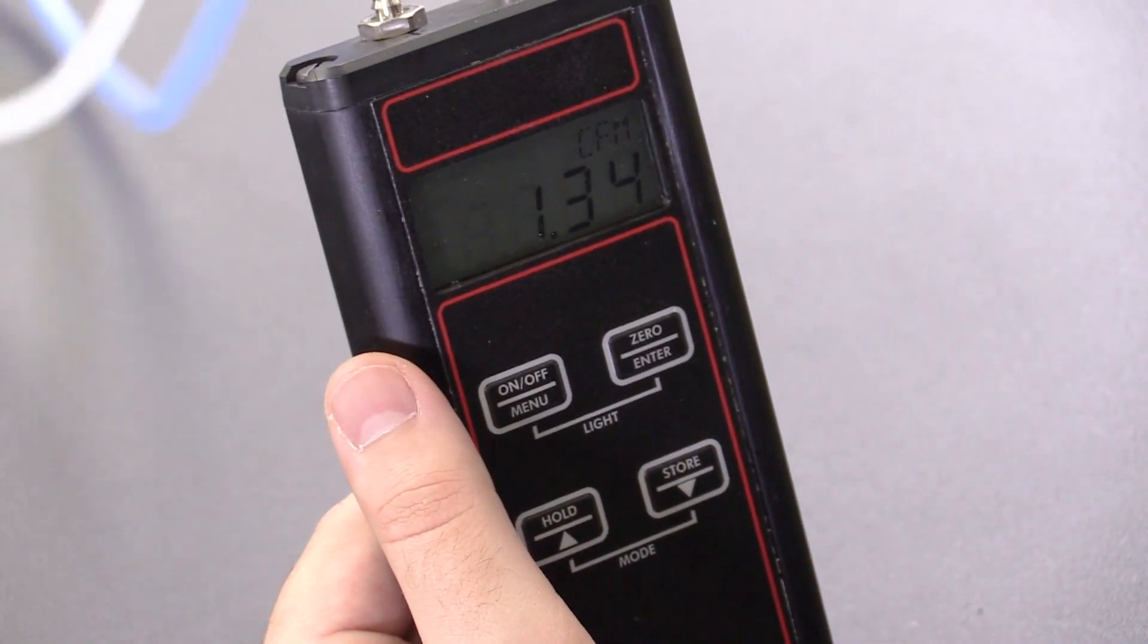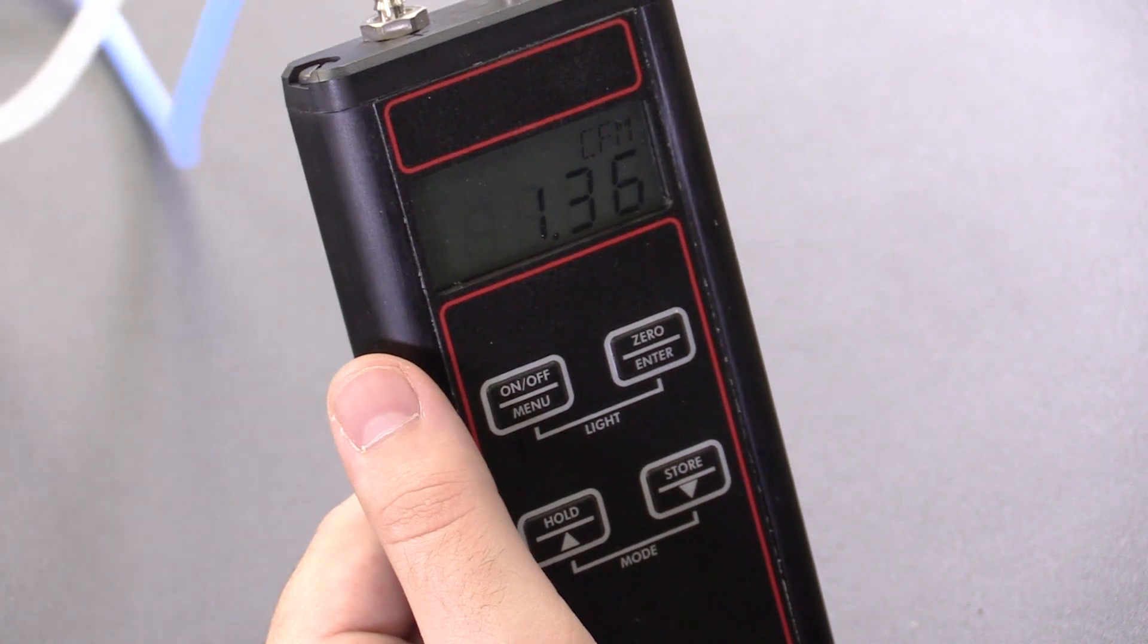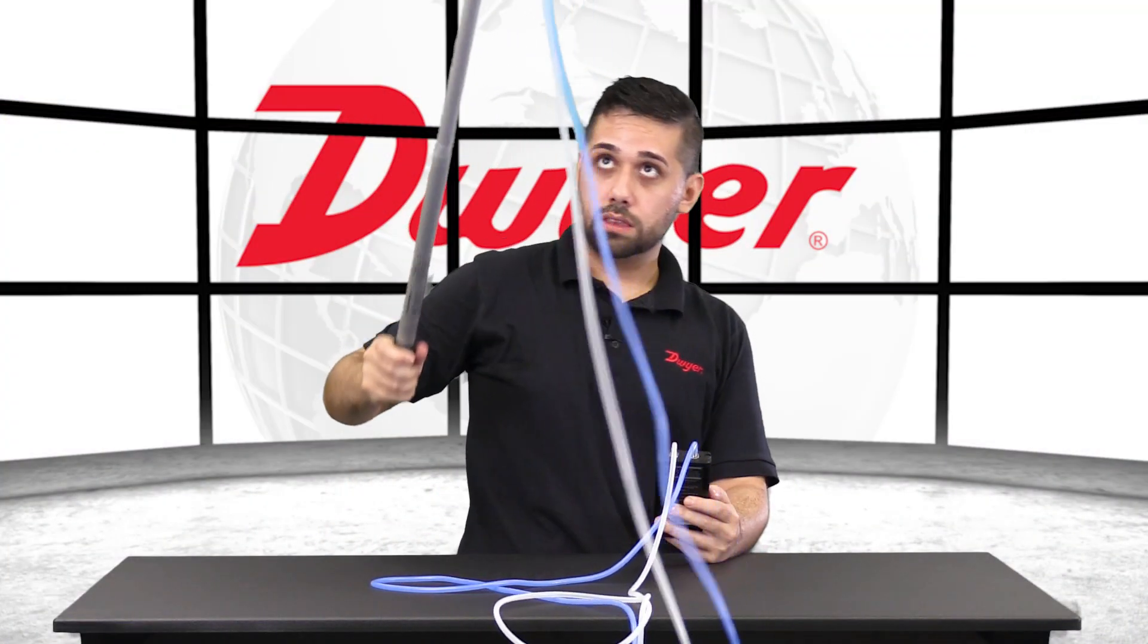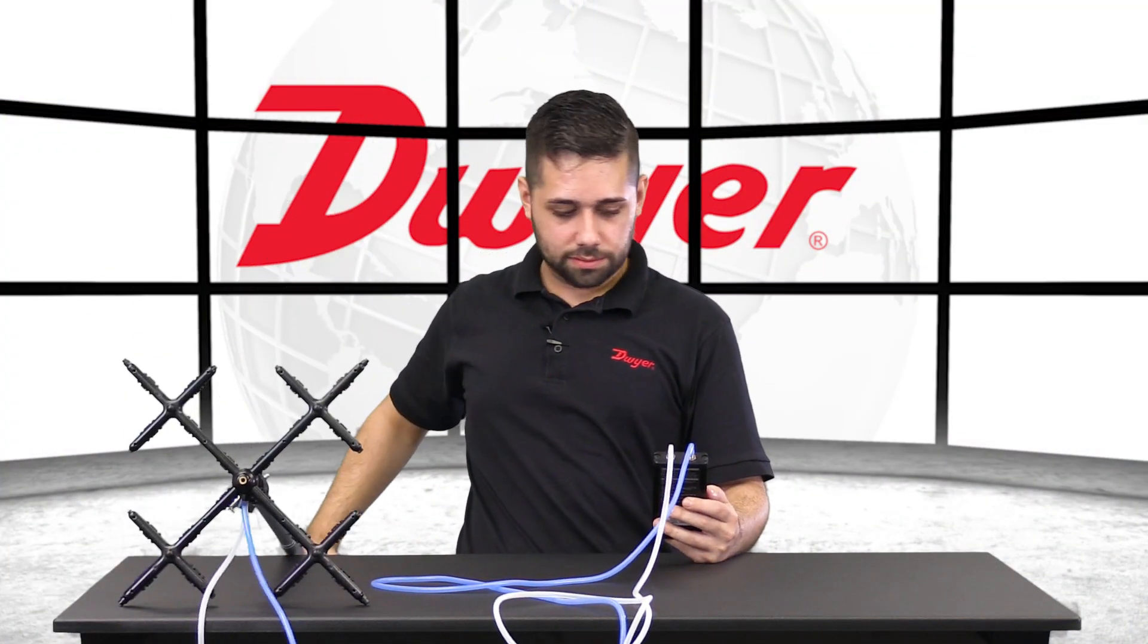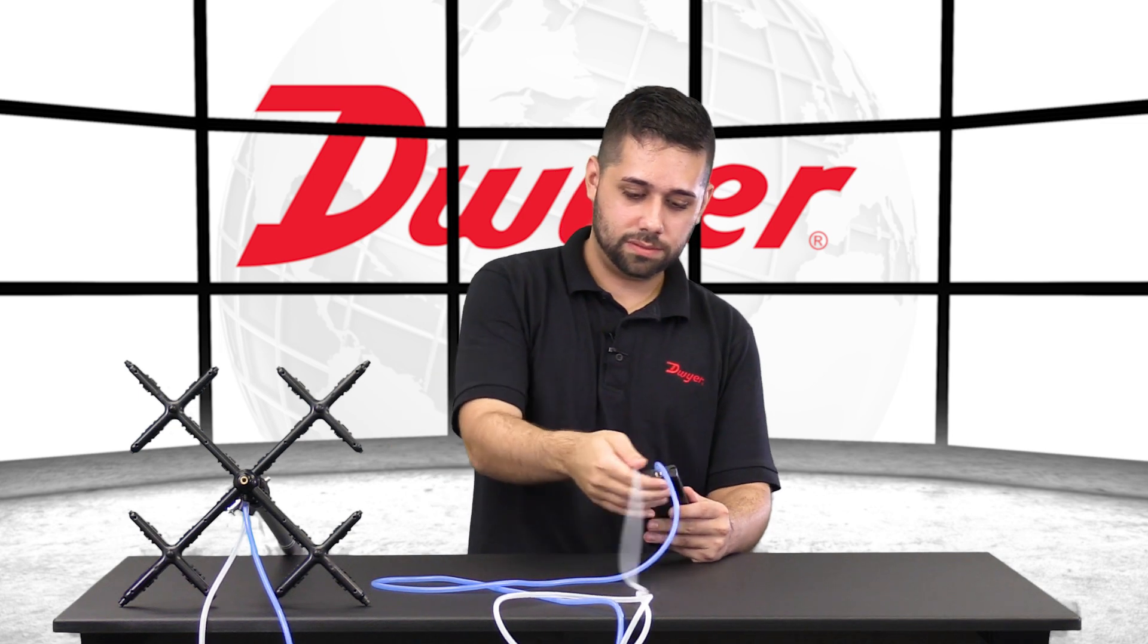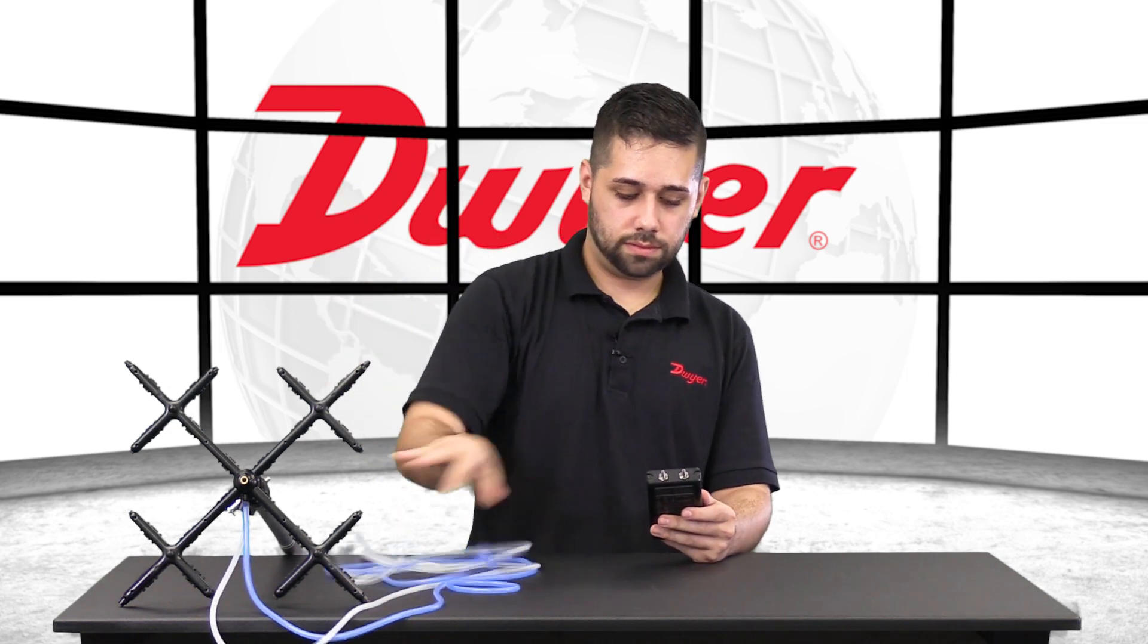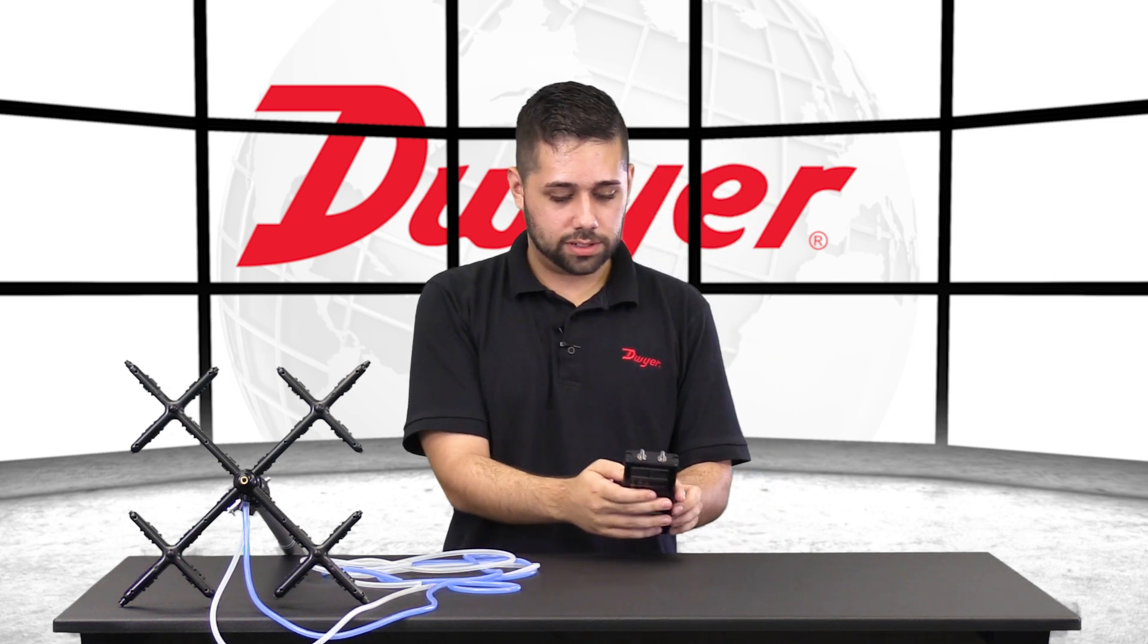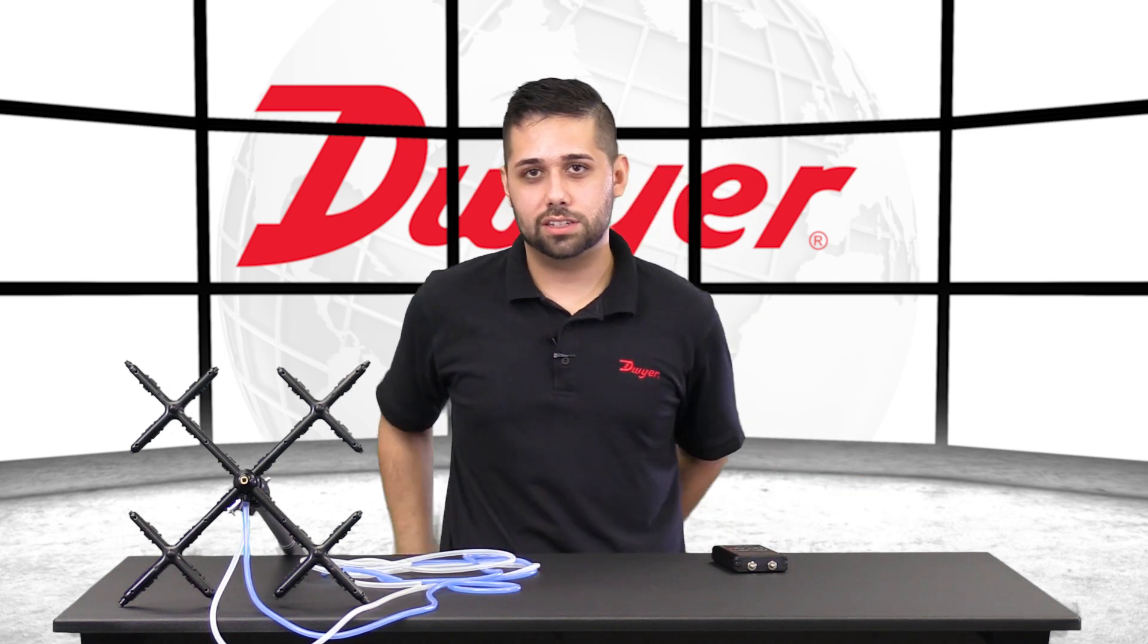And there we are. Looks like we're getting about 1.4 CFM. Once we're happy with our measurement, disconnect our tubes. And that is how you use the 477AV with the 160G grid.